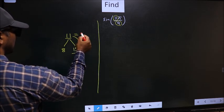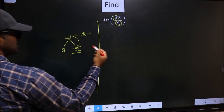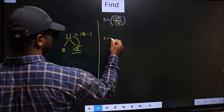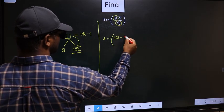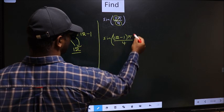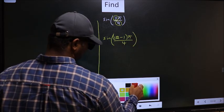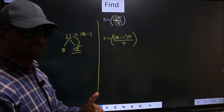So, now 11 should be written as 12 minus 1. So, this will change to sine. In place of 11, now you write 12 minus 1, π by 4. This is your step 1.